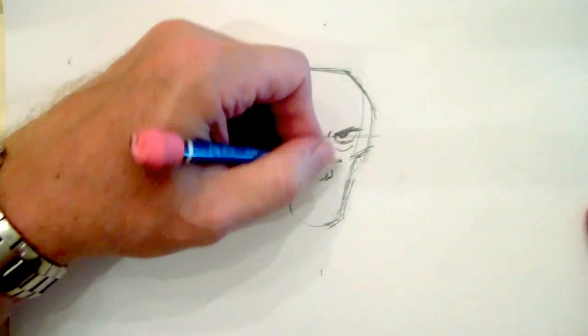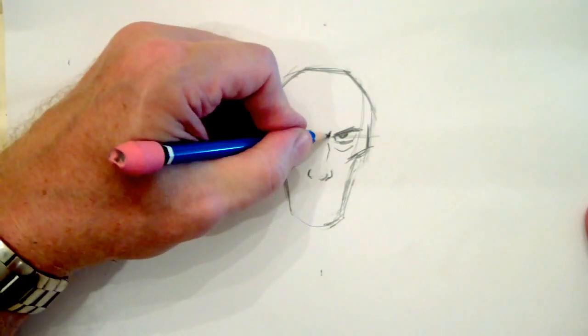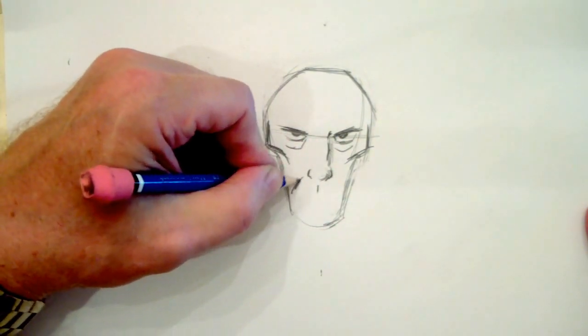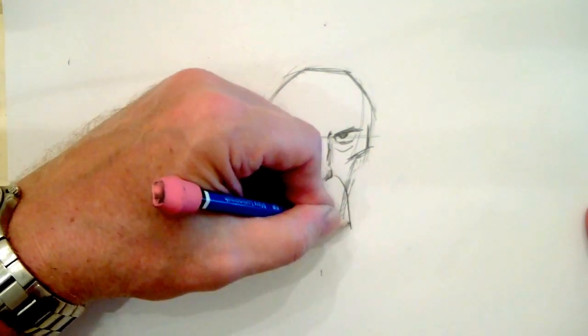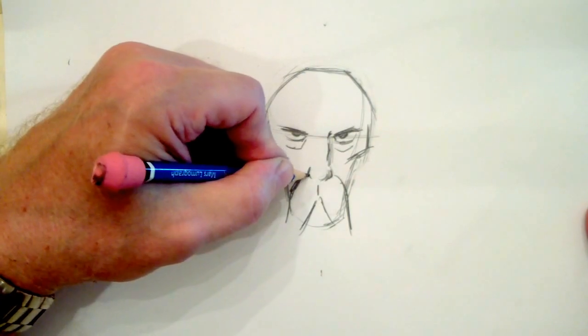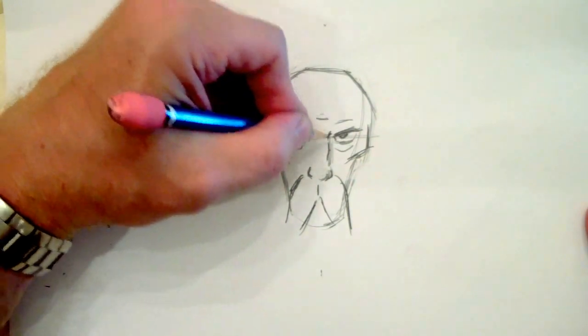Okay, now here are the cheekbones. I'm going to shade the side of the nose and give him the famous Merlin mustache like so. Some wrinkles on top.